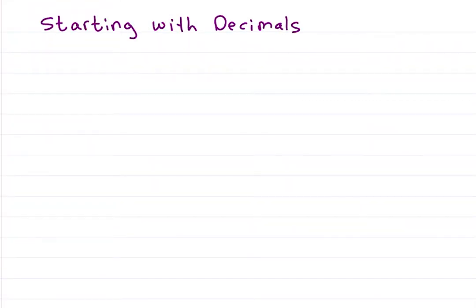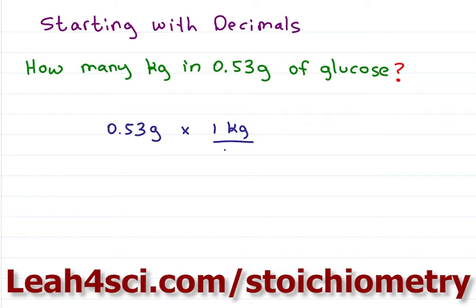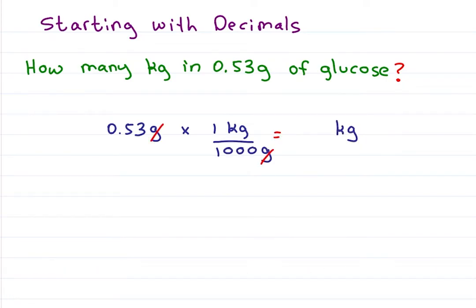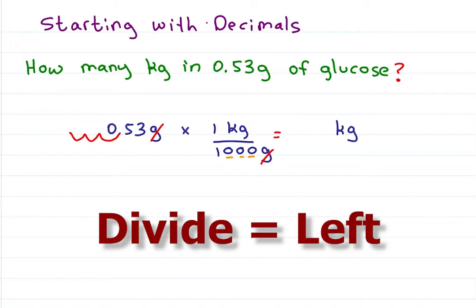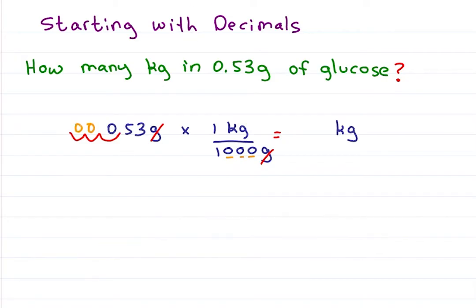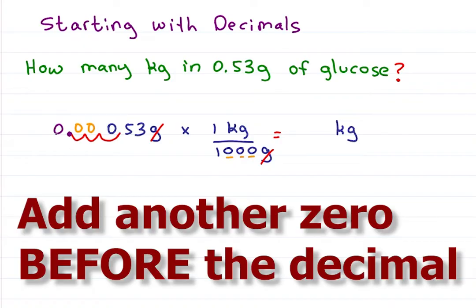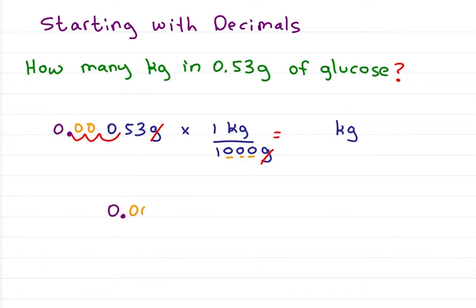What if you're starting with decimals, such as this MCAT style question, how many kilograms in 0.53 grams of glucose? Here's the setup as I teach in my stoichiometry series below, but for this math trick we're just looking at 0.53 divided by 1000. 1000 has three 0s, divide means we move the decimal three spaces to the left and fill in the missing 0, and this is where students get stuck. This right here is my decimal, that means I need to have one more zero to show where the decimal begins. For a final answer of 0.00053, something likely in scientific notation which I cover in another video.